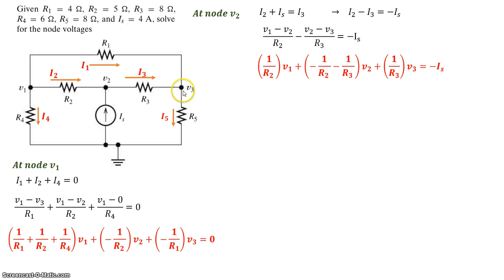At node V3, we have I3 coming into the node, I1 also coming into the node, and I5 is exiting the node. So we have I1 plus I3 is equal to I5. Let's bring I5 to the left hand side, so we get I1 plus I3 minus I5 is equal to 0.